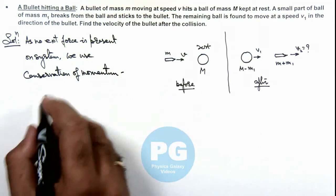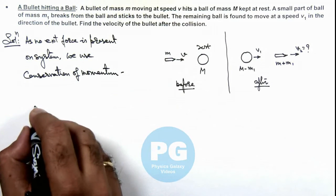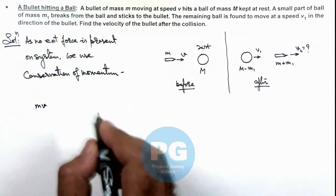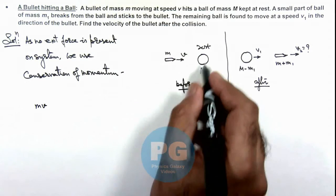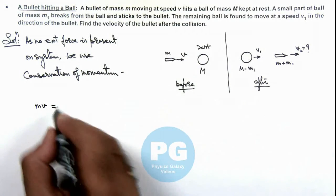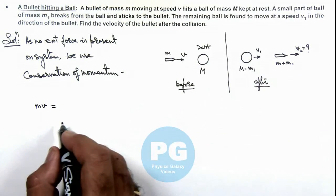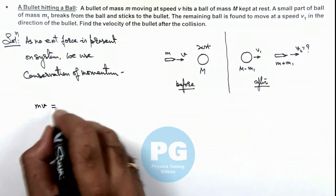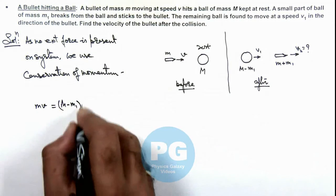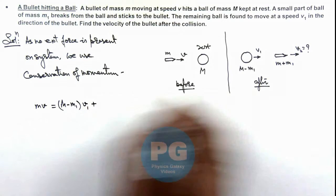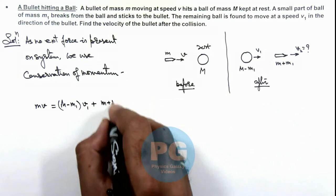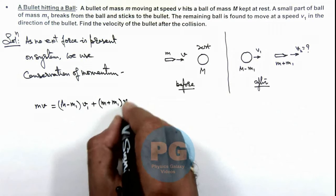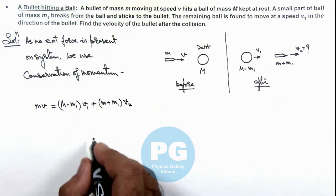Initially before collision, the bullet is having momentum mv, and there is no momentum in the ball. But after collision, if we talk about the momentum in the ball, the momentum is (M-m1) multiplied by v1, plus in the bullet it is (m+m1) multiplied by v2, where we are required to find the value of v2.